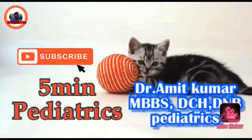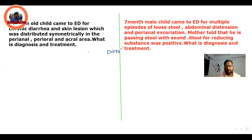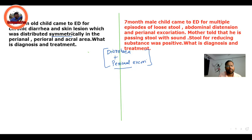Hello and welcome to my channel 5-Minute Pediatrics. A few days back I posted two questions related to diarrhea with perianal excoriation. Let's discuss the two diseases one by one. The first question was a 7-month-old child with chronic diarrhea and skin lesions distributed symmetrically over the perianal, perioral, and acral areas. This is the typical history of acrodermatitis enteropathica.